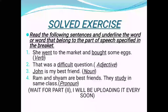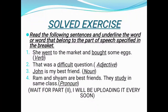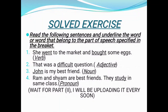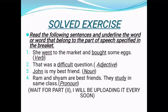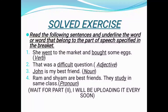Now moving towards the solved exercise of parts of speech. In this exercise, you are given different parts of speech indicated in brackets. Let's get started. 'She went to the market and bought some eggs' — verb is given in the bracket. So you have to underline the verb in the sentence. In this sentence, the verbs will be 'went' and 'bought.'